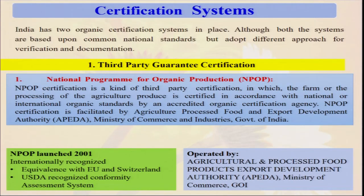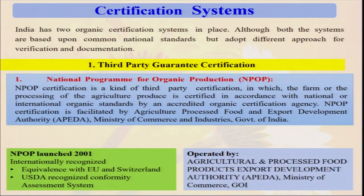For certification to export produce to the international market and earn high foreign exchange, inspection is very important — this is called third-party certification. It is given under the National Programme for Organic Production (NPOP). NPOP certification is a kind of third-party certification in which the farm or processing of agricultural produce is certified. Not only the farm, but also any post-harvest value addition must maintain organic standards. NPOP certification is facilitated by the Agricultural and Processed Food Products Export Development Authority (APEDA), which is under the Ministry of Agriculture and the Ministry of Commerce and Industries.